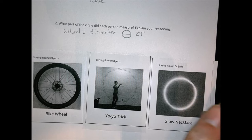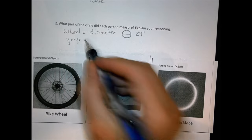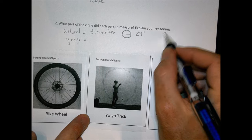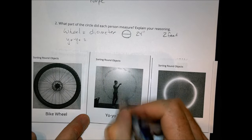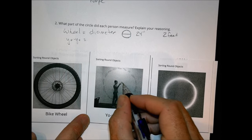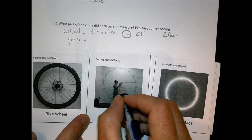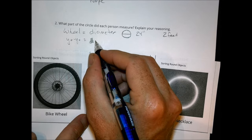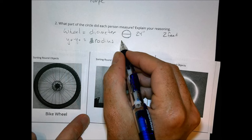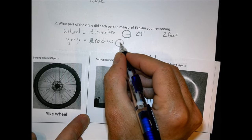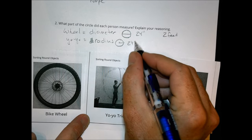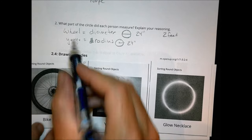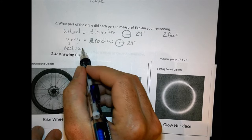For the yo-yo trick, 24 inches is the same as two feet. The girl is probably about five feet tall, and the yo-yo circle seems as tall as she is. So if that's my center, I could go out 24 inches in every direction. Her 24 inches is best thought of as the radius — the distance from the center to the outer edge of that circle.